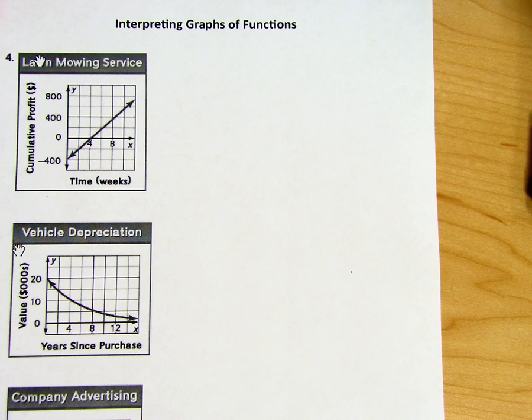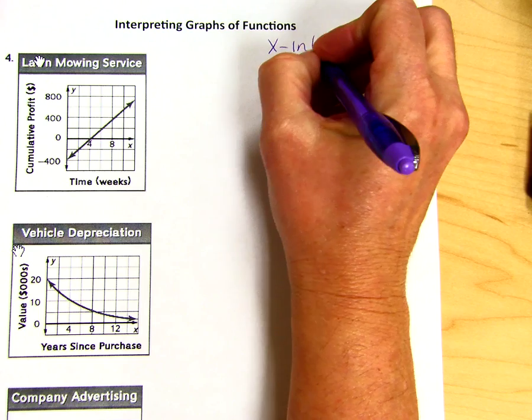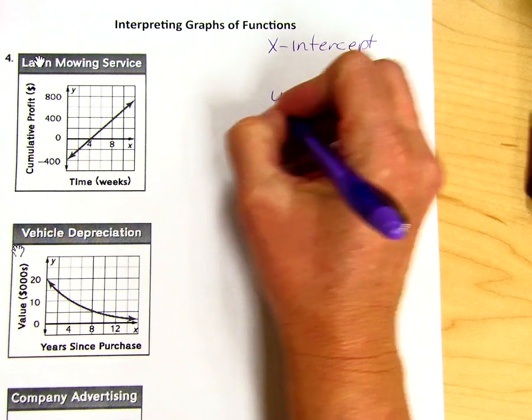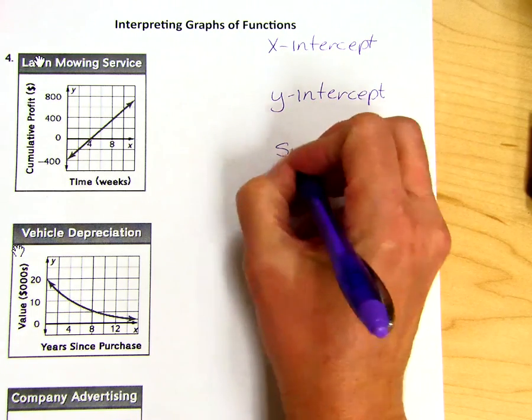Today we will be looking at interpreting graphs of functions. There are several vocabulary terms we need to be aware of: x-intercept, y-intercept, and symmetry.